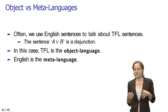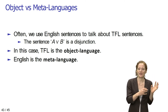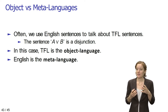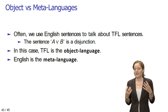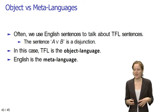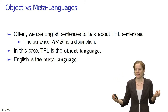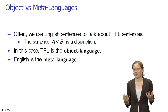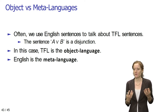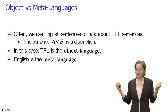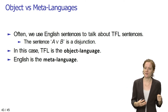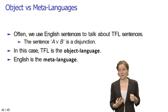In this case we are using a so-called meta-language to talk about a so-called object language. In this course we typically use English sentences to talk about TFL sentences. That means we are using English as a meta-language in order to talk about TFL, which in this case is our object language. For example, the sentence 'A or B is a disjunction' is an English sentence — so English is our meta-language — and we are talking about a TFL sentence, so TFL here is the object language.